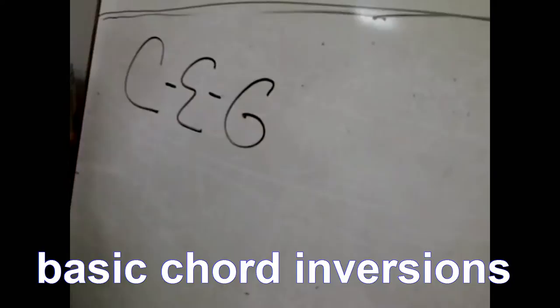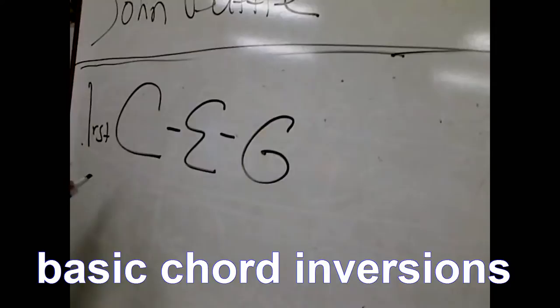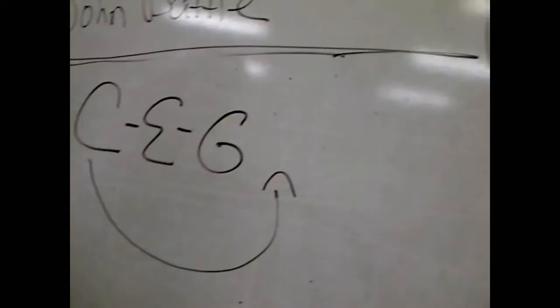Inversions. C, E, G is what inversion of the C chord? The first. In order to invert the C chord or any other chords, you take the left, which is the one that's furthest to the left, and you move it all the way to the right.